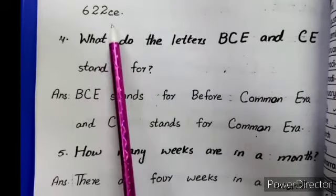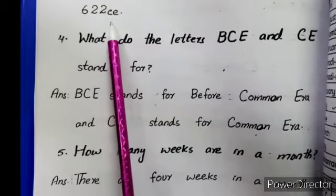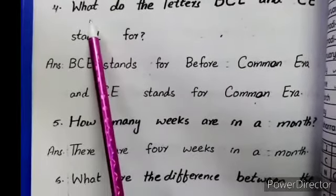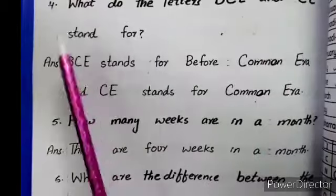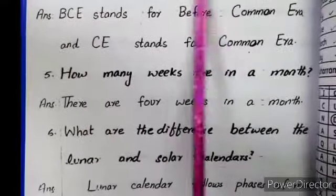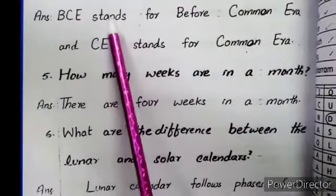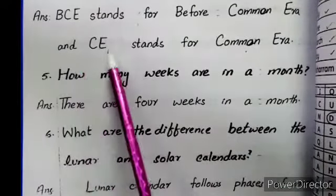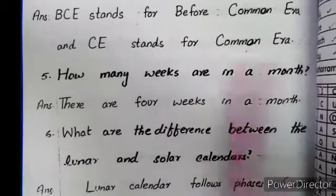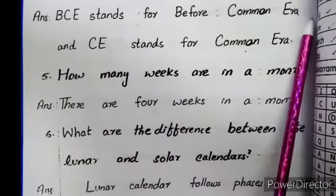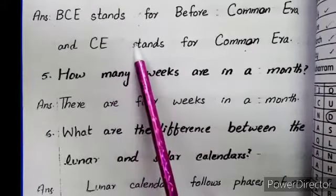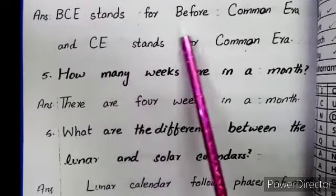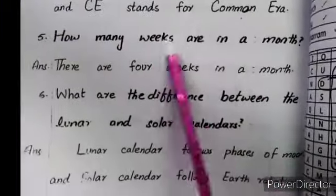What do the letters BCE and CE stand for? BCE stands for Before Common Era, and CE stands for Common Era. Common Era refers to the time after Hazrat Isa (peace be upon him) was born, and Before Common Era refers to the time before that.